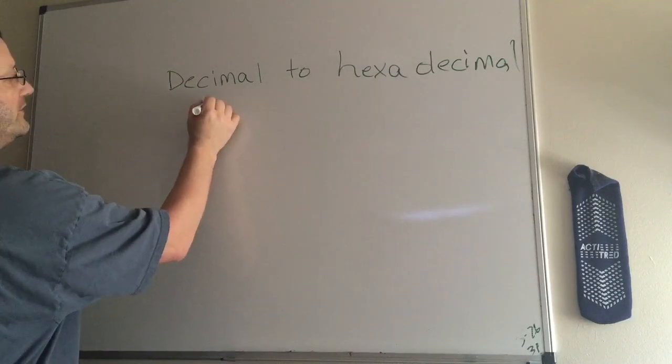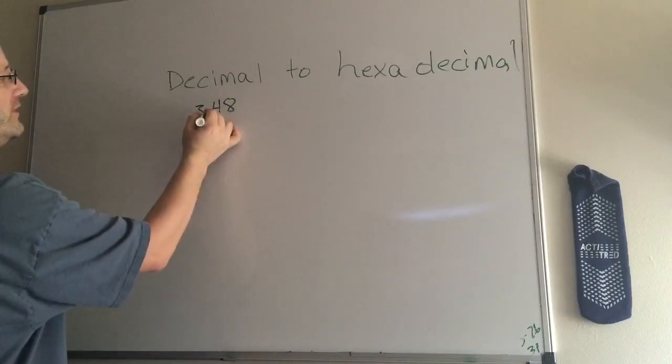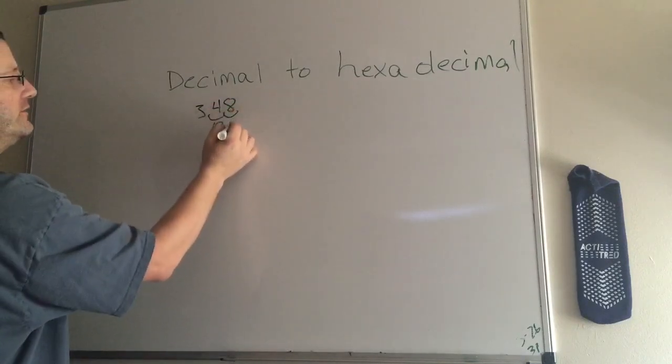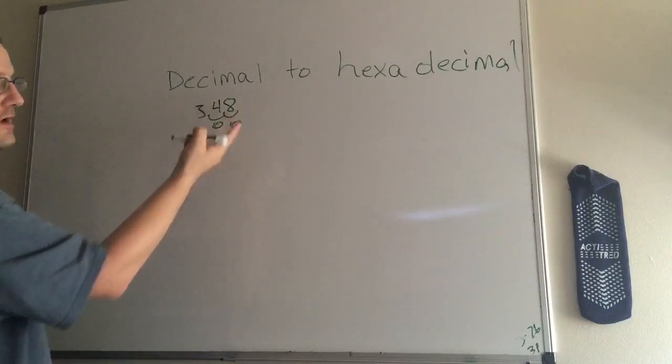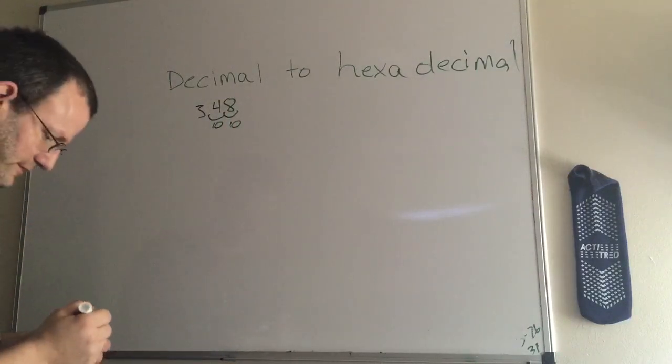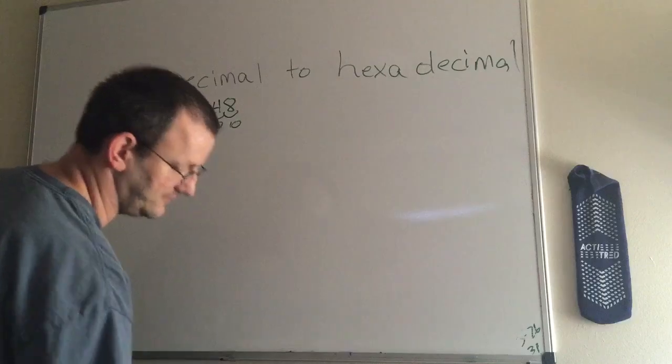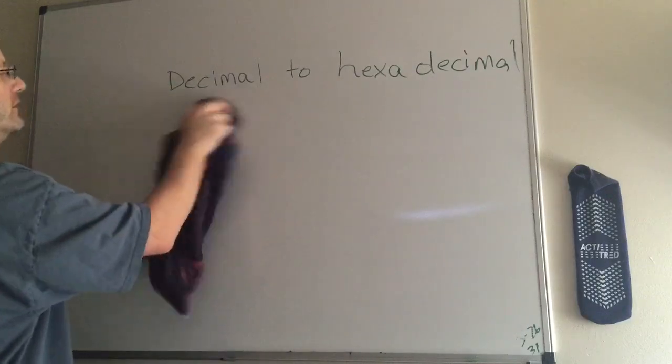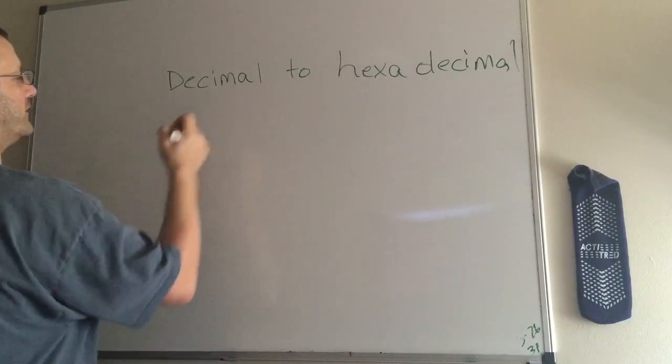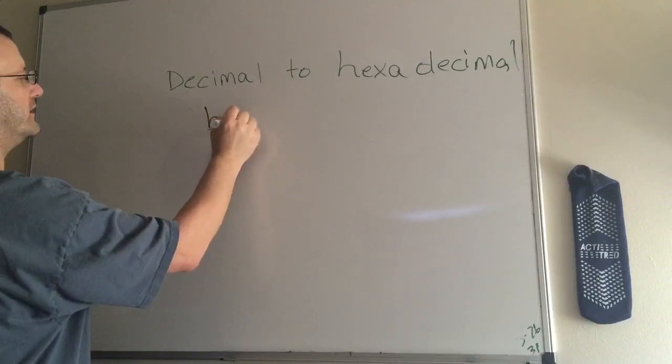For example, 3.48. You know, you move it over one, you move it over a tenth. Move it over one, then a tenth, obviously you get to 100, so that's 48 hundredths. So that's how the decimal system worked. We call that system the base 10 system.